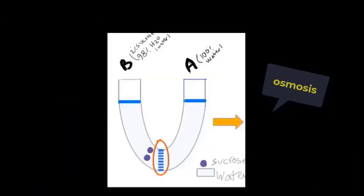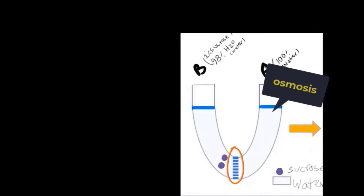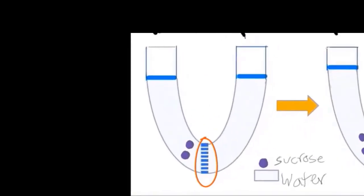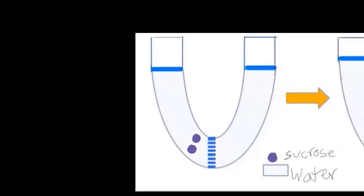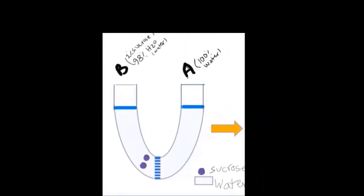For example, in this slide, you see a U-shaped tube that has two parts. These two parts are separated by a semi-permeable membrane. It has a specific pore that allows water and other small molecules to pass through the membrane. On the other hand, the solute — in this example, sucrose — has a bigger size and cannot pass through this membrane.